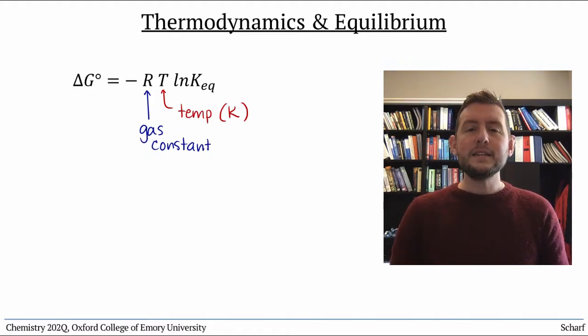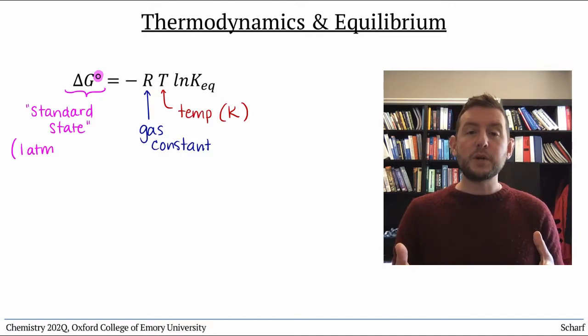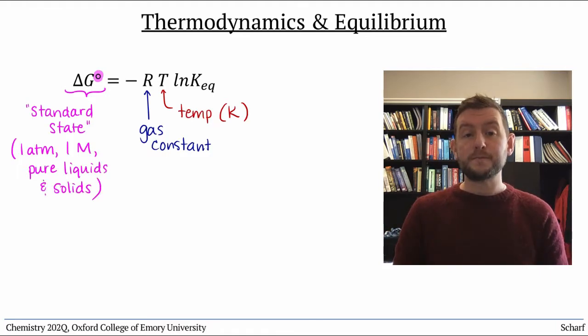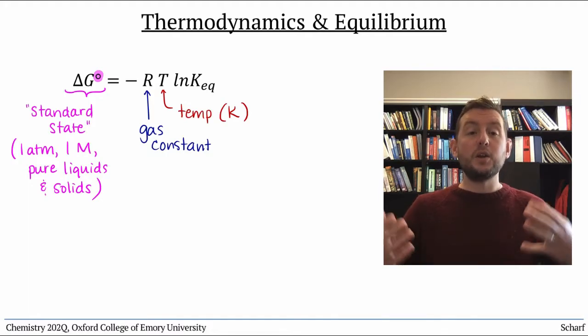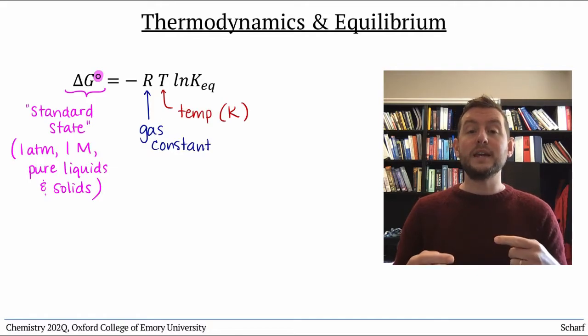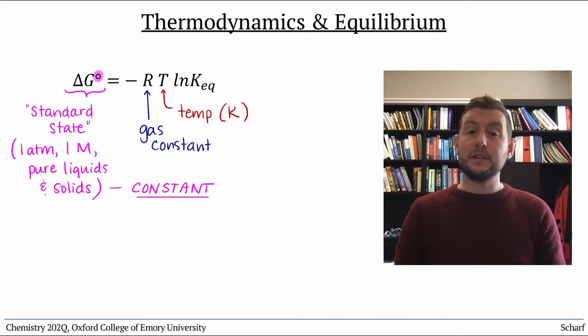For the first time, I'm highlighting the little naught symbol on delta G. That symbol means standard state, at one atmosphere of pressure, with solutions all at one molar concentration, and any liquids or solids being pure. Delta G naught actually represents the amount of energy that would be released if a reaction went entirely from reactants to products. It's a constant value for a given reaction at a given temperature.